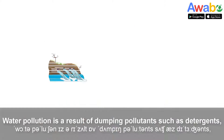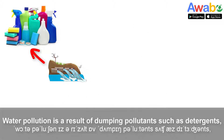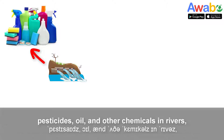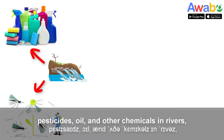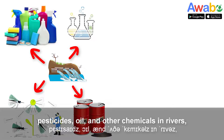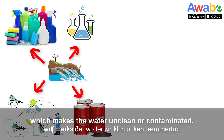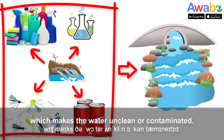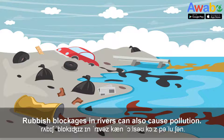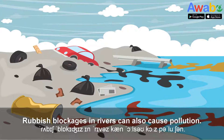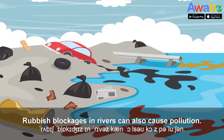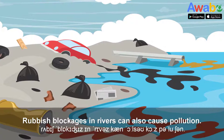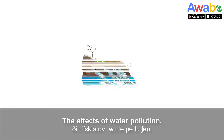Water pollution is a result of dumping pollutants such as detergents, pesticides, oil, and other chemicals in rivers, which makes the water unclean or contaminated. Rubbish blockages in rivers can also cause pollution.